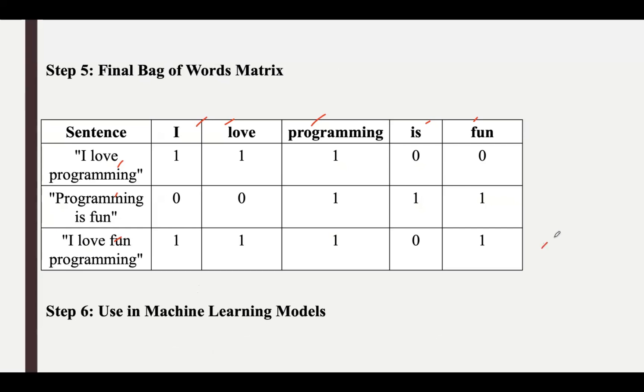The last step is to use it in machine learning models. The Bag of Words representation, which is a sparse matrix of word frequency, can be used as input for machine learning models like logistic regression, Naive Bayes, support vector machines, or deep learning models for various NLP tasks like text classification and sentiment analysis.